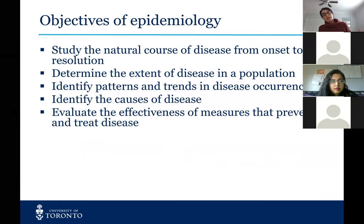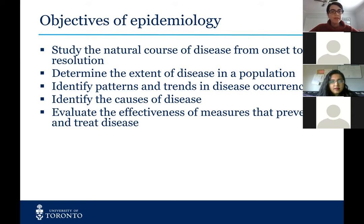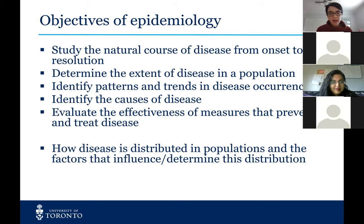The goals and objectives of epidemiology are really wide-ranging and not limited to just a few points, but this is meant to give you an idea of the type of work we do as epidemiologists. We might study the natural course of disease from onset to resolution, determine the extent of disease in a population and any patterns or trends. We can identify causes of disease and evaluate the effectiveness of measures that prevent or treat disease, really looking at how disease is distributed in a population and the factors that determine that distribution.